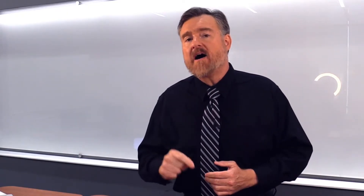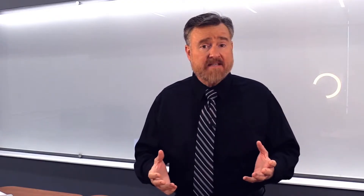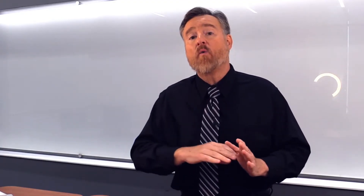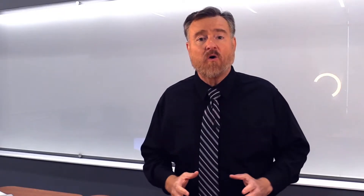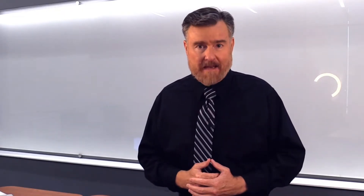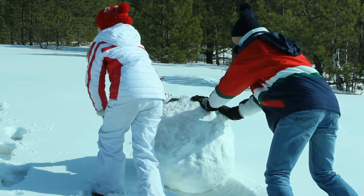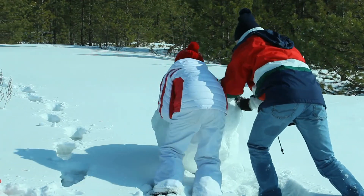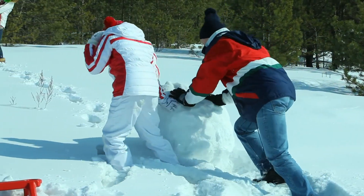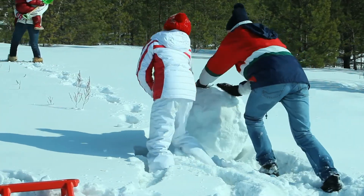Let's look at one more non-random sampling technique. This is a technique you can use in a situation where random sampling wouldn't work, and it's called snowball sampling. Snowball sampling begins with a primary data source — a beginning individual, or perhaps a small group of individuals. The primary data source then nominates other potential participants, and so your sample grows and grows, just like rolling a snowball down the hill, with each new participant nominating other potential participants to add to your research pool.